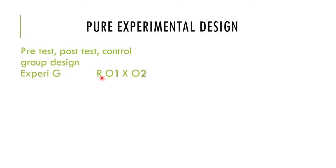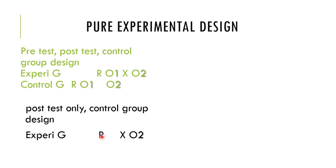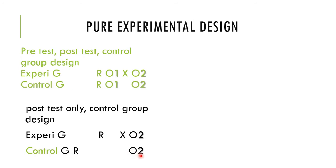In true experimental design: Pre-test post-test control group design — the experimental group is randomly assigned, a pre-test (O1) is given, treatment (X) applied, then post-test (O2). The control group is randomly assigned, pre-test given, no treatment, then post-test. Post-test only control group design — experimental group is randomly assigned, treatment applied, then post-test; control group has no treatment, only post-test. The Solomon four-group design combines both, with groups receiving various combinations of pre-test, treatment, and post-test.